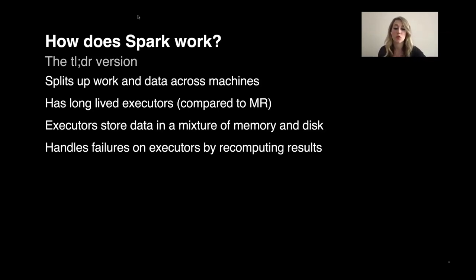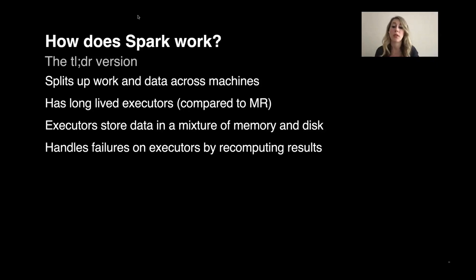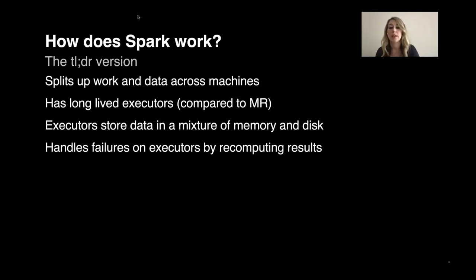Apache Spark has abstracted away from users any need to deal with orchestrating data processing parallelism or worrying about fault tolerance — this is all taken care of for them. Because of the architecture, it was known that nodes would fail throughout this process, and so the executors are able to handle those failures by recomputing results. The executors are long-lived compared to MapReduce, and they store data in a mixture of memory and disk to run faster.